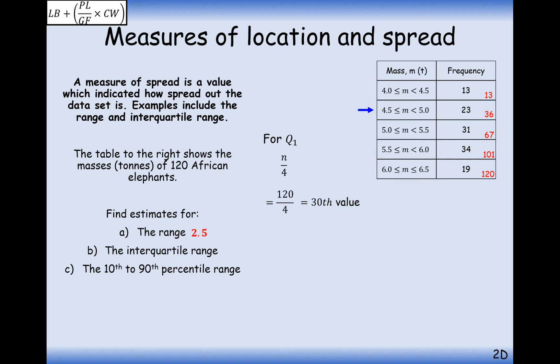So now what we're going to do is apply linear interpolation. So remember it's this formula here. It's the lower bounds of this group here plus the place in the group that the 30th value is going to be divided by how many items we have in our group, the group frequency, and times by the class width, which is 5 here.